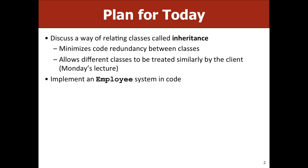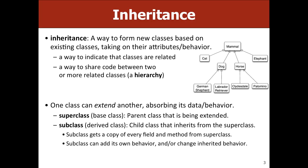As part of this, we'll be implementing a series of classes that build up a system of employees — different types of employees who are all related to each other. Inheritance is a way to indicate that two classes are related and share code in a hierarchy. One class is a parent, the other is a child. The subclass extends the superclass, absorbing its data and behavior.